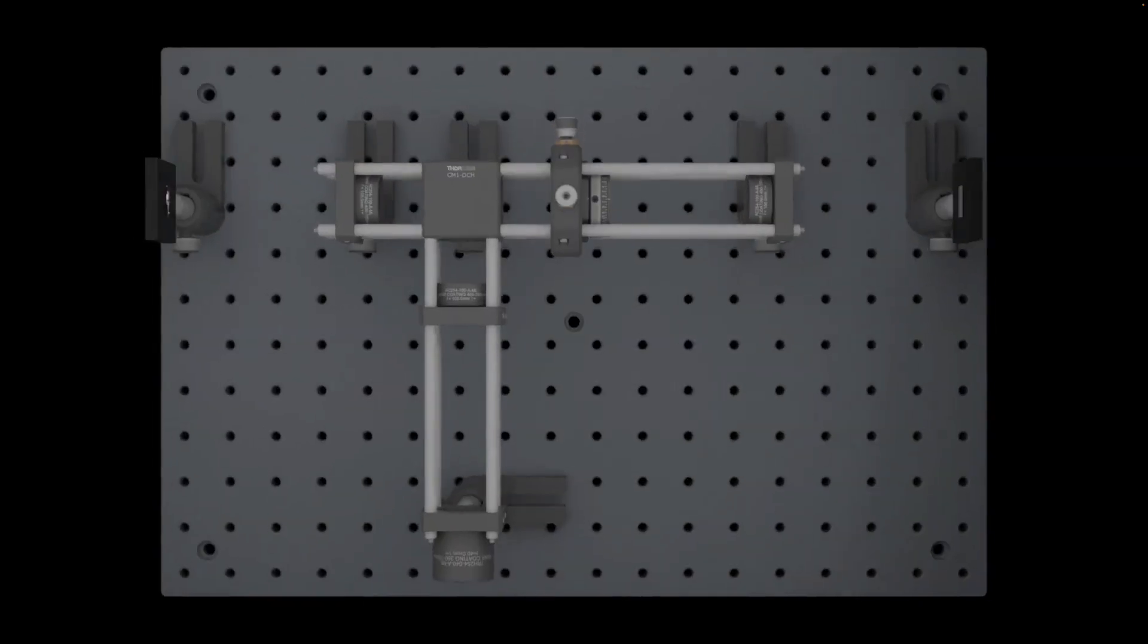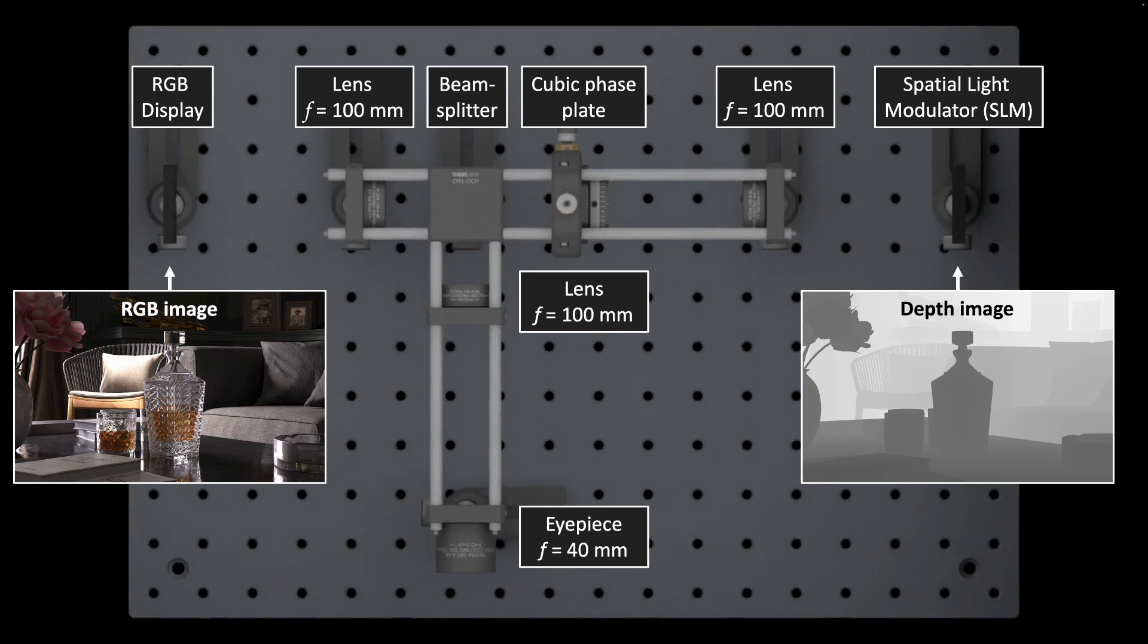This optical design forms the basis for a split-Lohmann display. Here is an overview of our proposed setup. Light from an RGB display passes through a cubic faceplate and forms an image on the SLM.